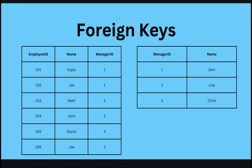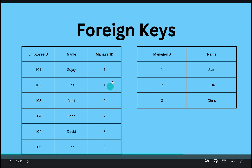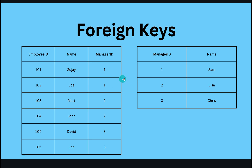So then, let's talk about foreign keys. What exactly is a foreign key? Here you have two tables: the first is an employee table, the second is the manager table. In the employee table, the employee ID is the primary key and the manager ID is the foreign key. In the manager table, the manager ID is the primary key.